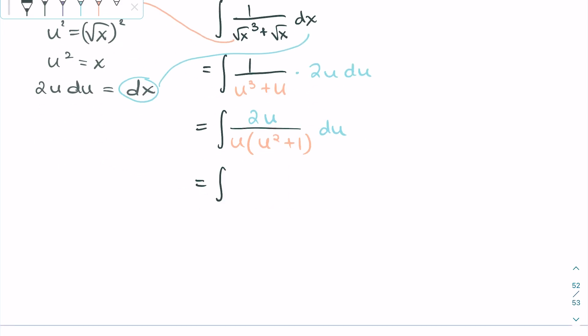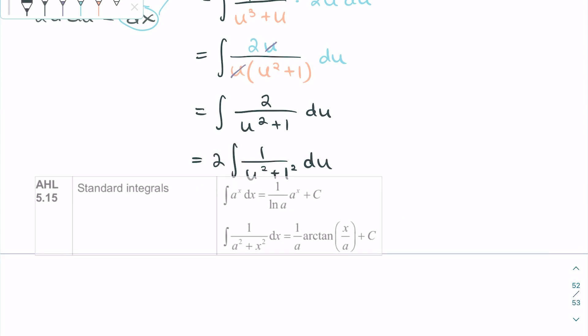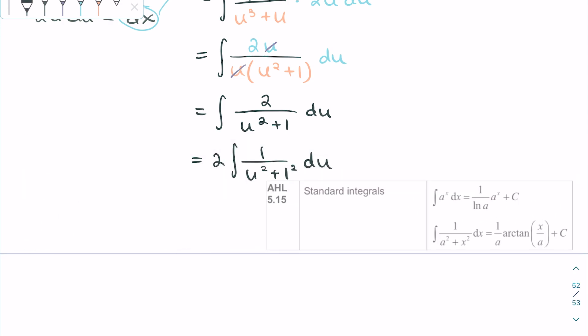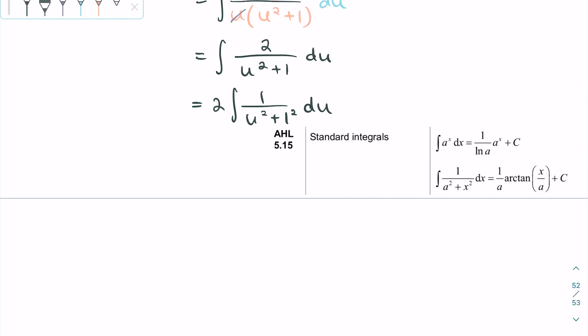We can factor out a u in the denominator and cancel it with a u in the numerator. We can rewrite this in the form 1 over u squared plus 1. This resembles a standard integral found in the formula booklet: 1 over a times arctan of x over a plus c.